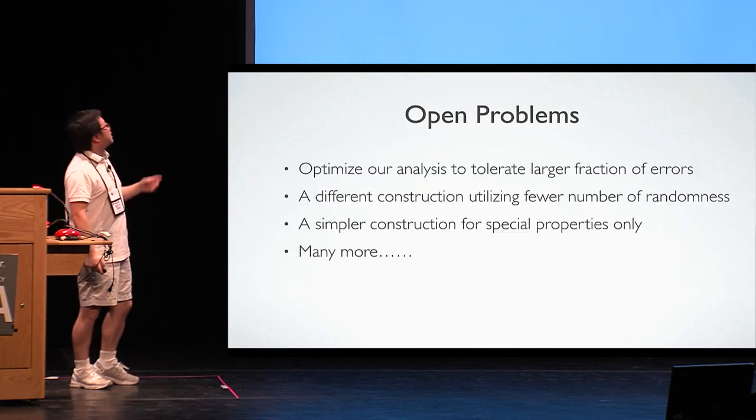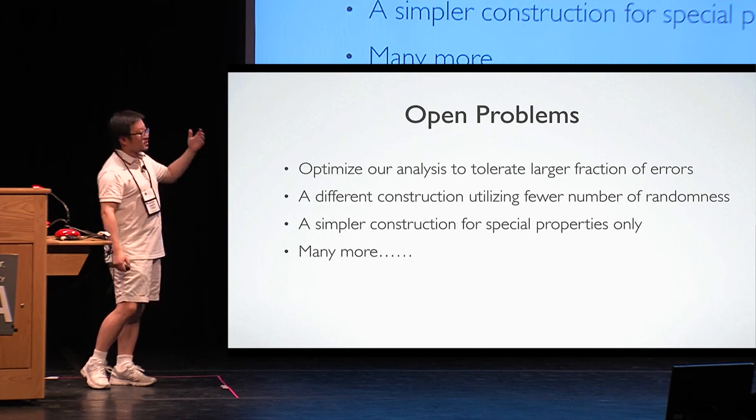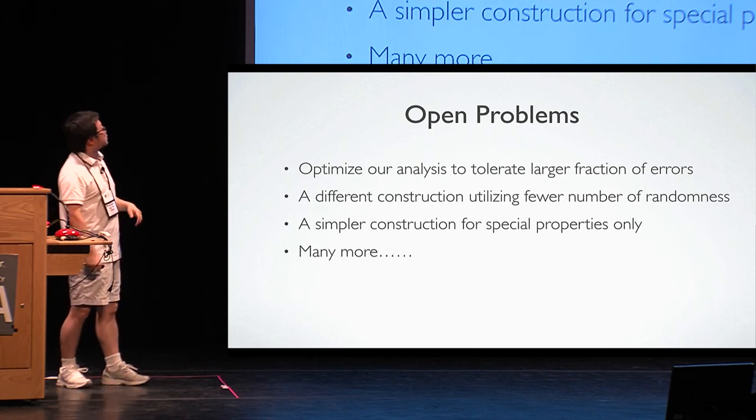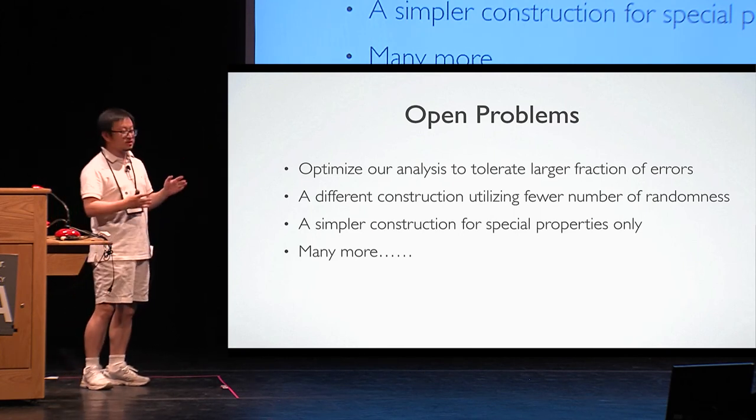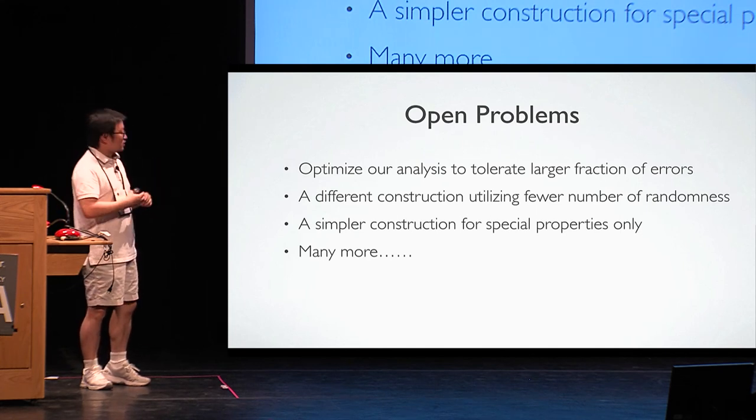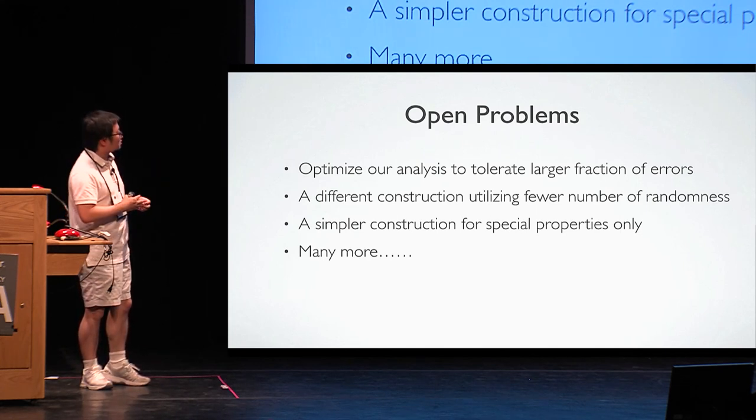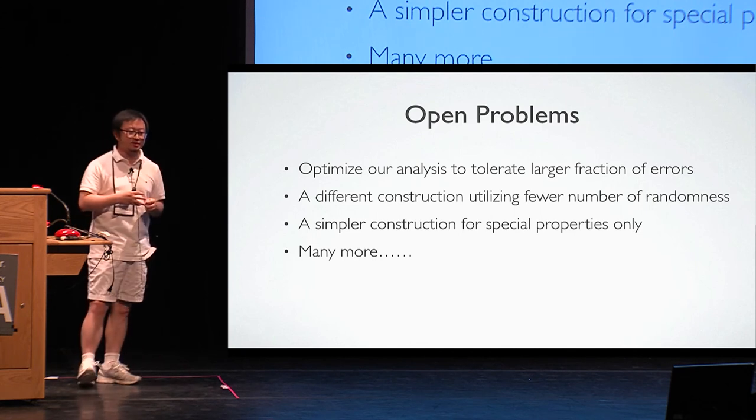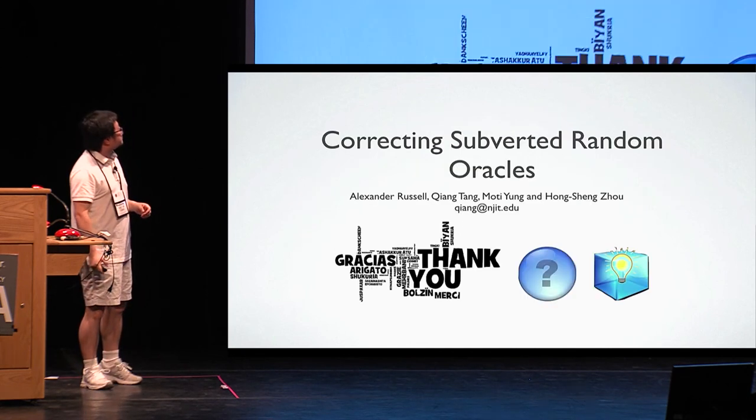And there are many open problems left. For example, we may optimize the analysis a little bit to get better parameters, get better constructions, or maybe we don't really need to save all the properties of the random oracle. We also need simpler construction. There are many more. Thanks.